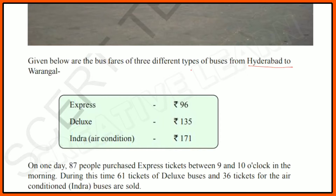Below are the bus fares of three different types of buses from Hyderabad to Warangal. First, Express — the cost of one ticket is 96 rupees. Next, Deluxe — the cost of one ticket is 135 rupees. Next, Indra (air condition bus) — the cost of one ticket is 171 rupees.